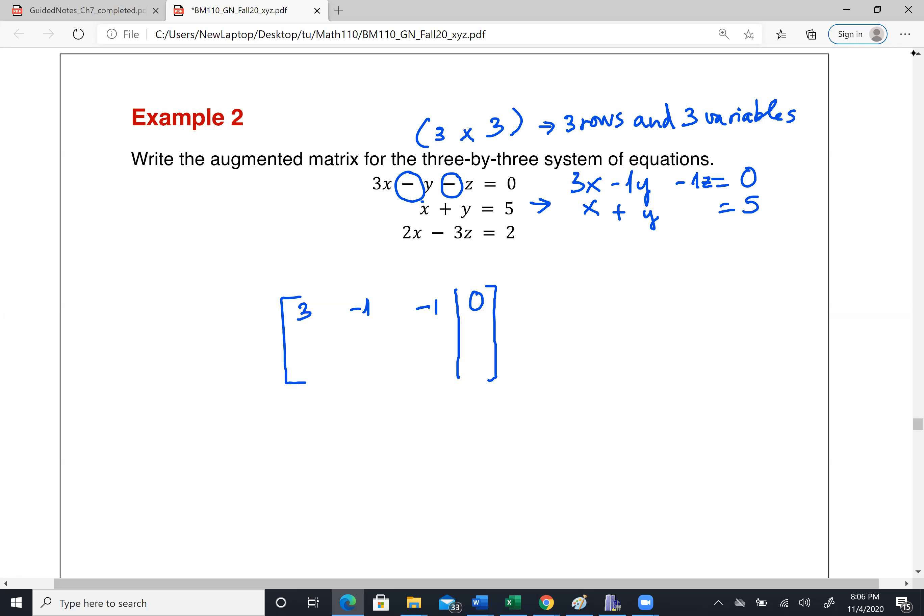And then the third one have 2x. We don't have y at all. So I could put like plus zero y. And the second one could be plus zero z. And the last one have negative 3z equal to two. So now I'm going to just put down all the coefficient. So the second one have 1, 1, 0, 5, 2, 0, negative 3, and 2. So that should be the answer for augmented matrix for this 3x3 system.